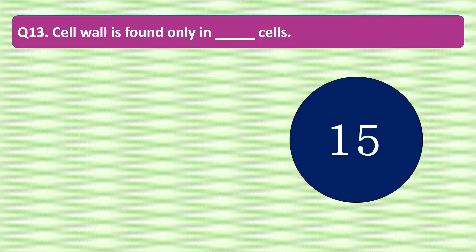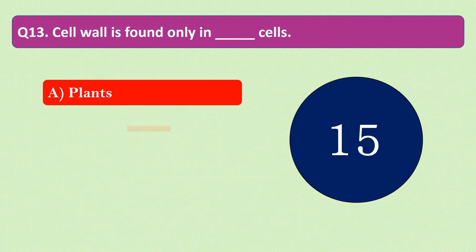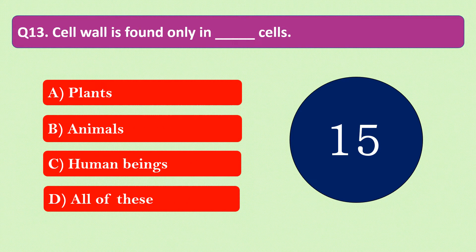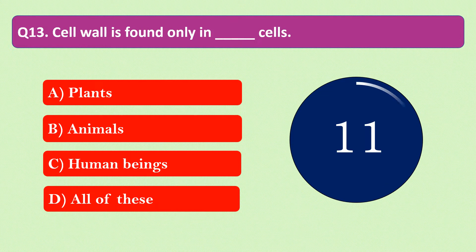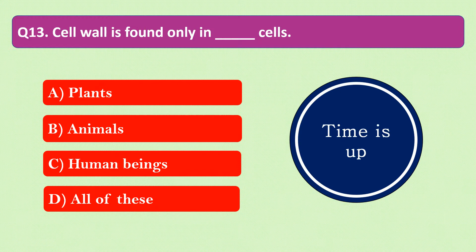Question number 13: Cell wall is found only in dash cells. The options are A. Plants, B. Animals, C. Human beings, or D. All of these. Your time starts now. Your time is up and the right answer is option A: Plants. Cell wall is found only in plant cells.